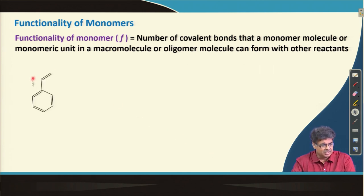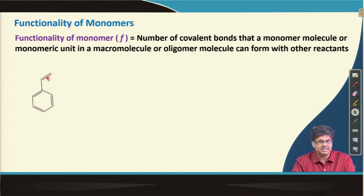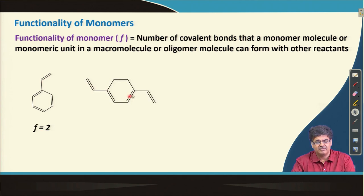To complete the discussion on functionality: styrene can form two bonds on each side of the double bond, so F is 2. Divinyl benzene can form four bonds, so F is 4.